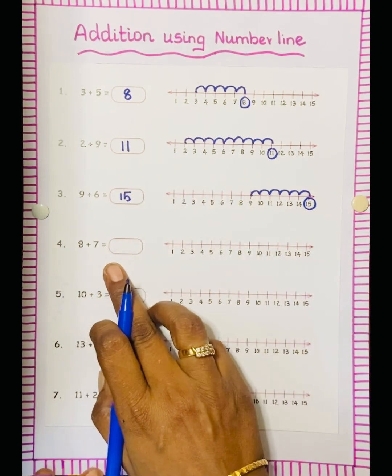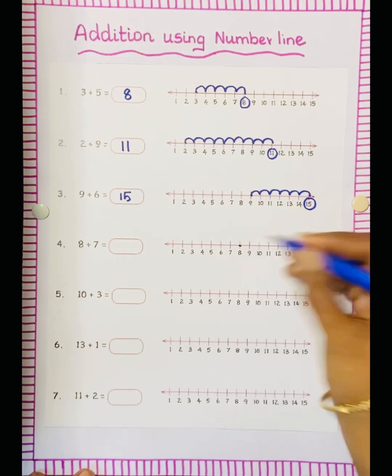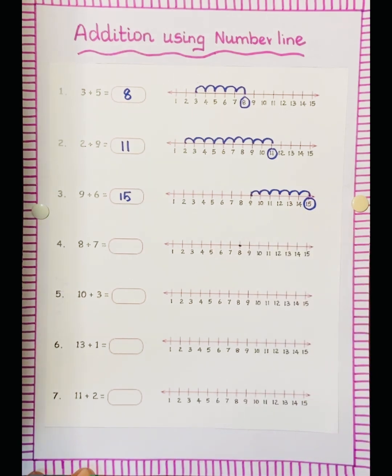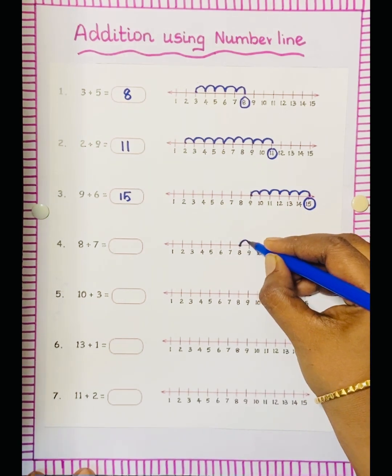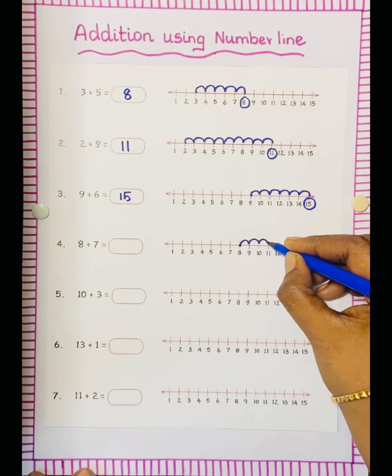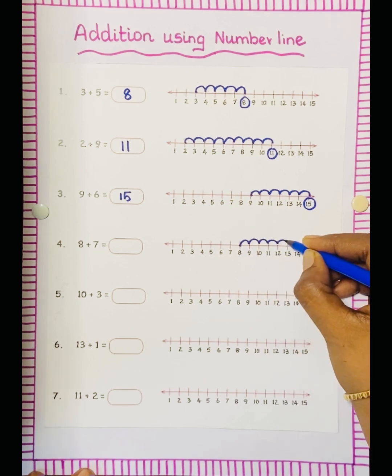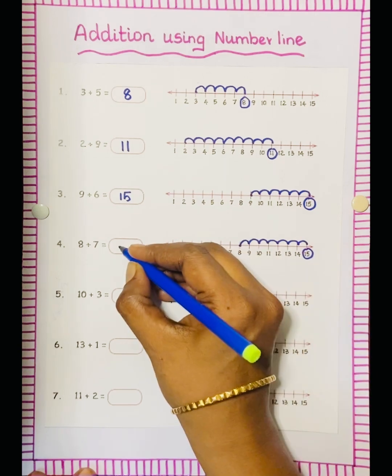8 plus 7. So we have to keep the dot at 8, then how many jumps? 7 jumps: 1, 2, 3, 4, 5, 6, 7. So the answer is 15.